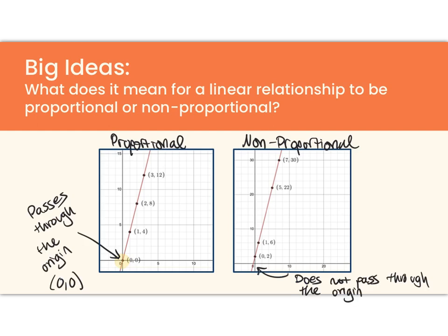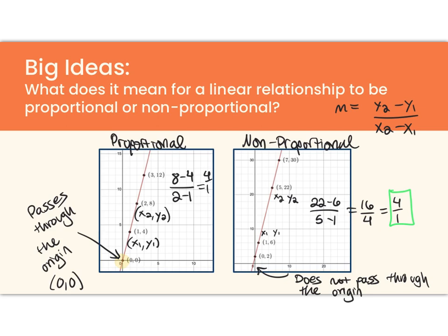Now, what if I wanted to find the slopes of these two lines? Remember, the slope formula tells us that our slope is equal to y2 minus y1 over x2 minus x1. So let me try that with each of these tables. I'm going to pick two points to be x1, y1, and x2, y2. I'll do that for each table. And remember, we established in the last video that it doesn't matter which two points I pick as long as I know the relationship is linear.